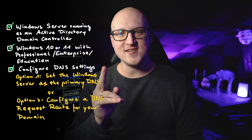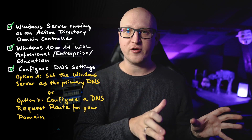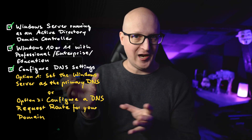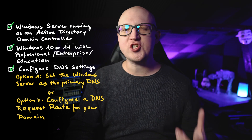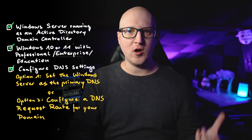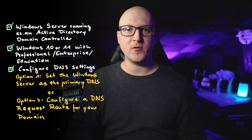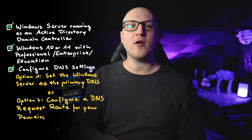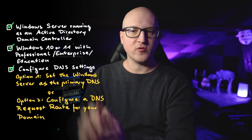The second, and in my opinion the better way, is to just keep your primary DNS server — which is usually a router or firewall — and configure it to only forward specific requests to your Active Directory domain. This is also called conditional forwarding or request routes depending on what system you're using. With that configuration, your DNS queries for websites will still go to your router, but DNS queries to the Active Directory domain will go to the domain controller.